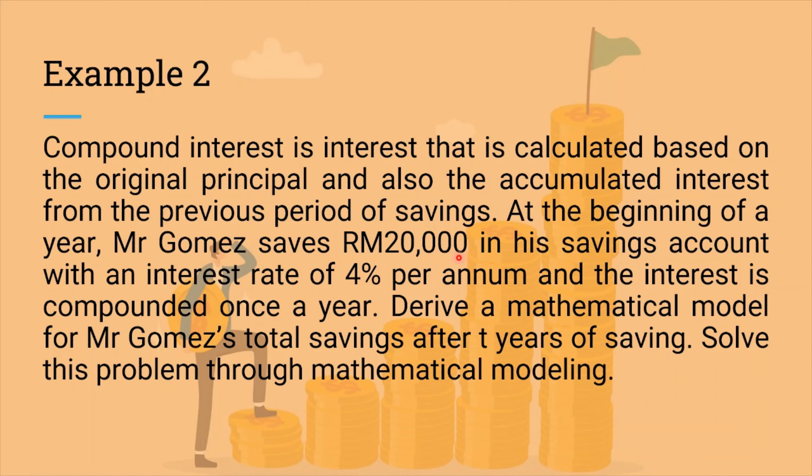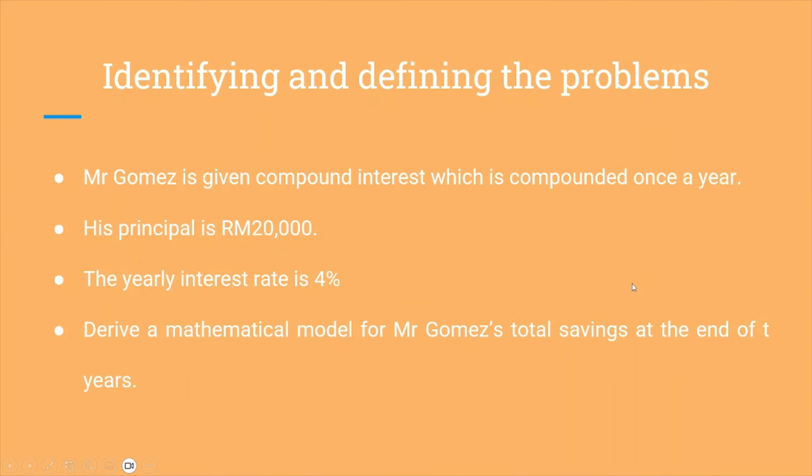RM20,000 is the principal, 4% is the annual interest in the bank. Let's do the first step: identify and define the problem. It's given that it's a compounded interest, compounded once a year, so it's per annum. This is the principal that is saved in the bank, savings of RM20,000, interest rate is 4% as mentioned earlier. And let's see how many years it's saved using the T symbol to represent the number of years.